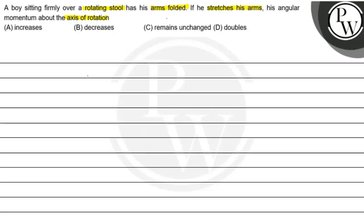So the condition is: initially this table is rotating, the axis of rotation is here, and here is a boy with his hands folded. Then he stretches his arms out a little bit.